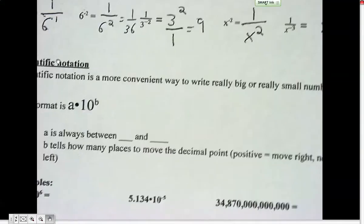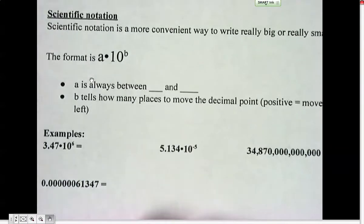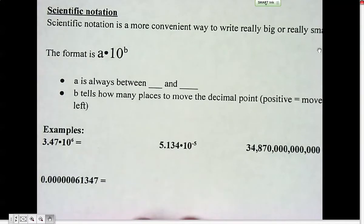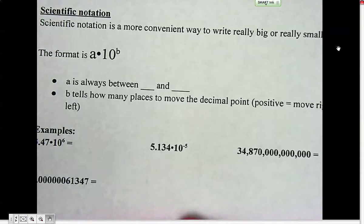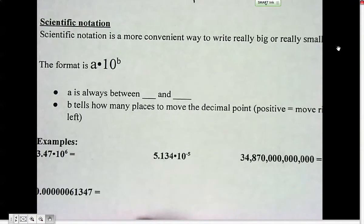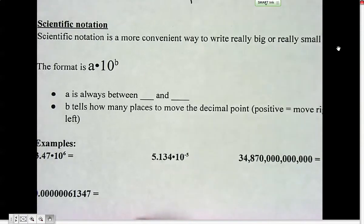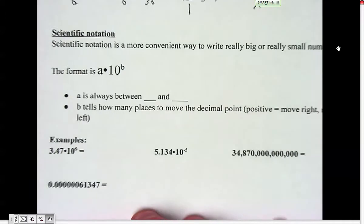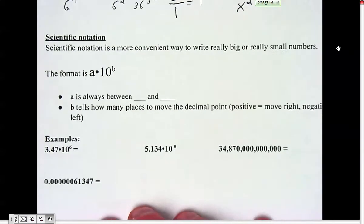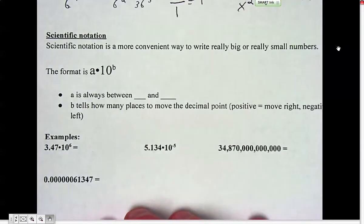Now we're going to talk about scientific notation, which you've probably learned about in your science class, but it's a good math review when we're doing exponents. Scientific notation is a convenient way to write really big or really small numbers, so we don't have to write so many digits and it gives us a better sense of how big the number is.